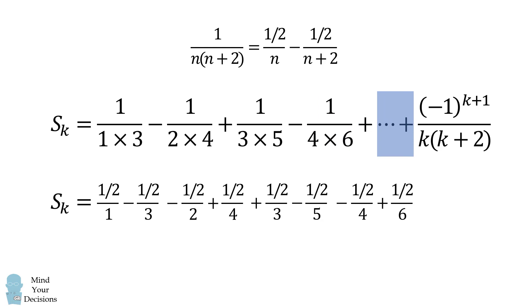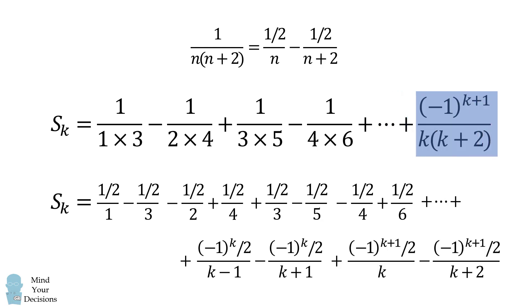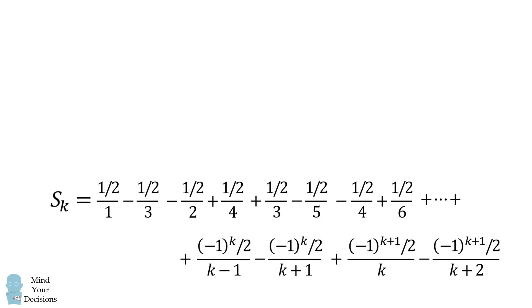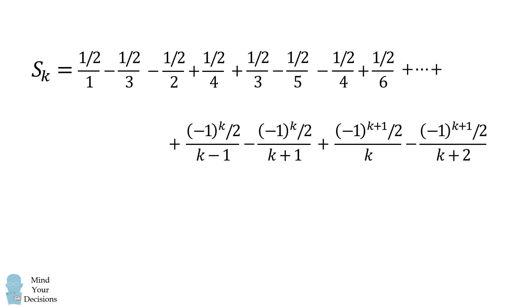We will continue substituting for each of the terms in this alternating series. We will make one more step that we will substitute for the k minus 1 term. We now substitute in for the final term. This looks very complicated, but it will all magically simplify.